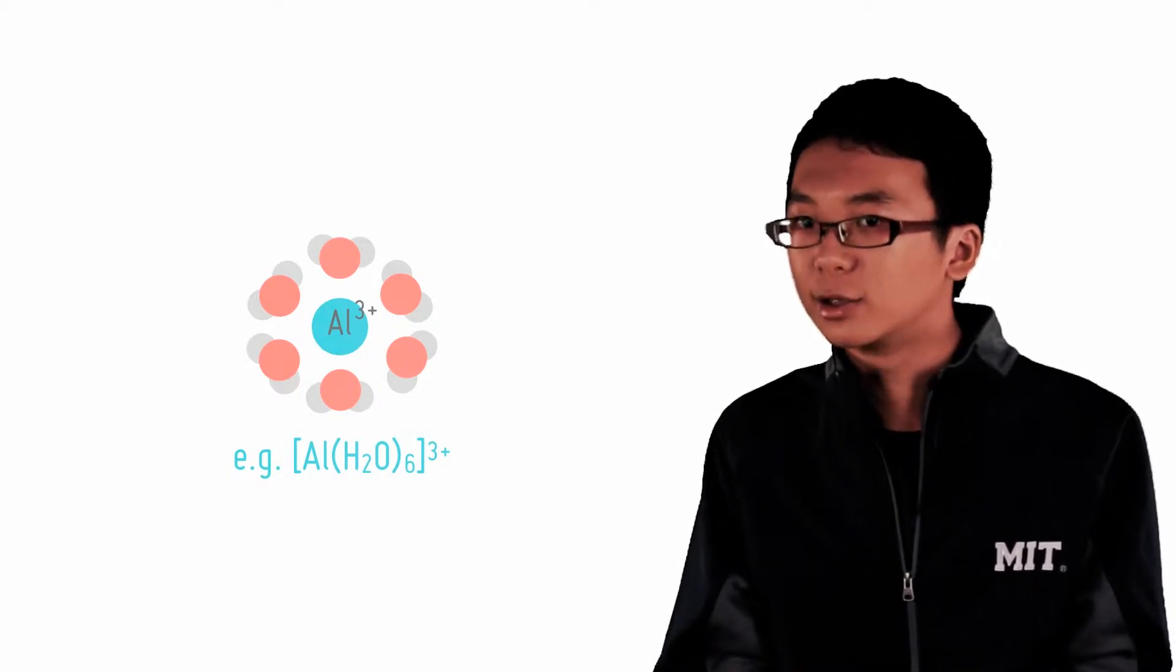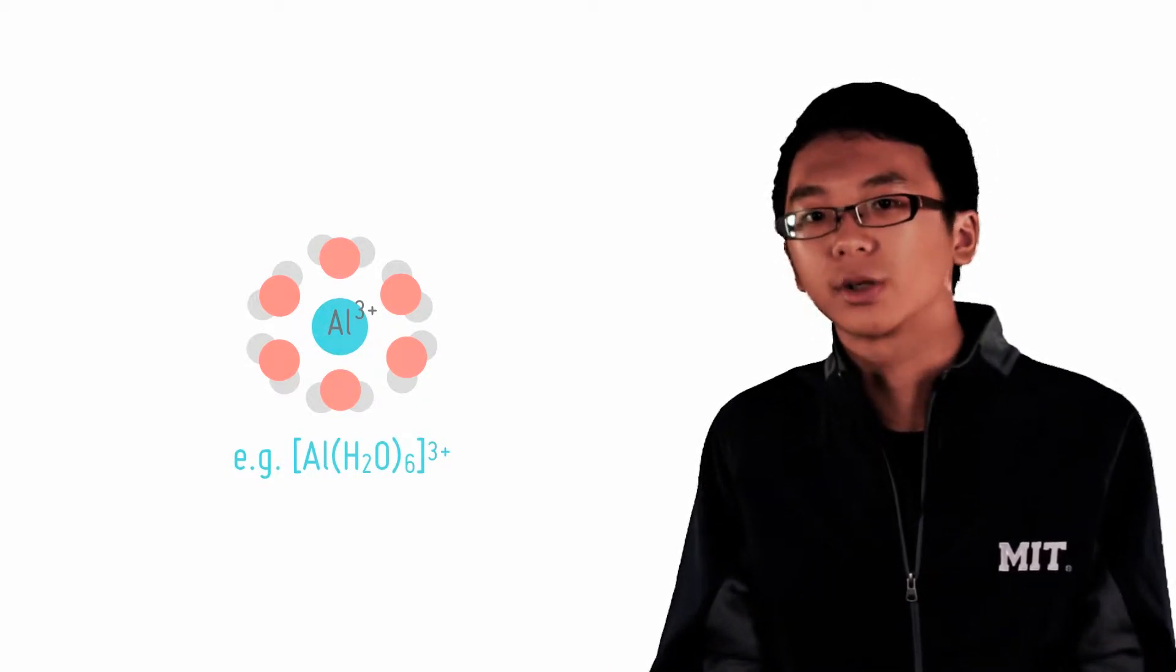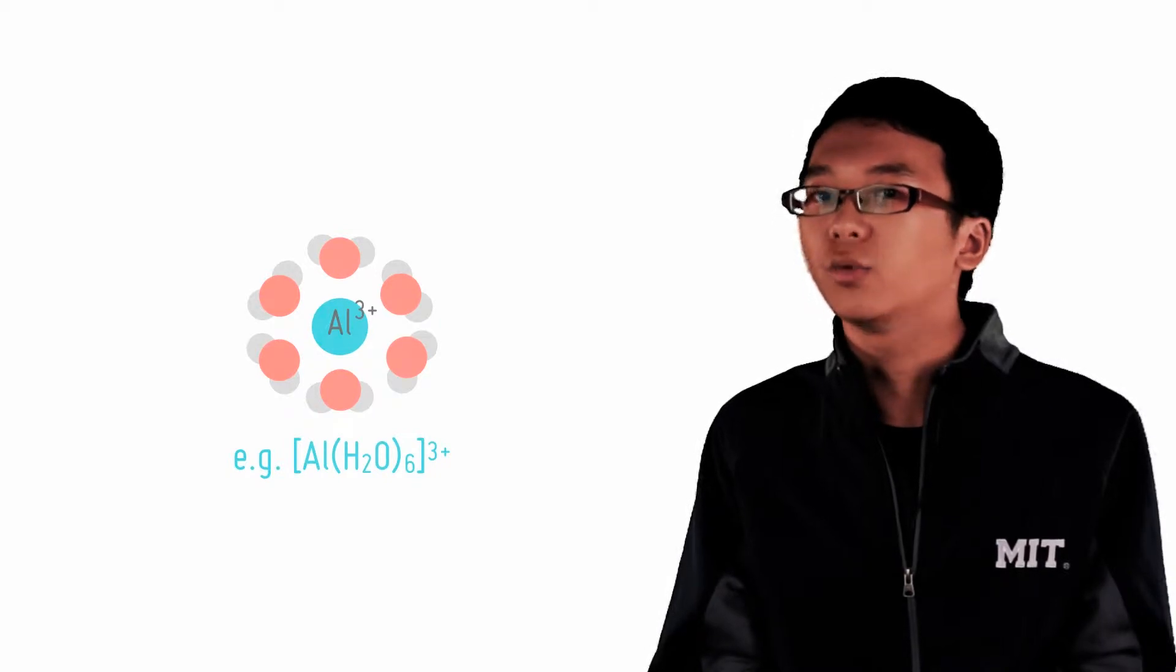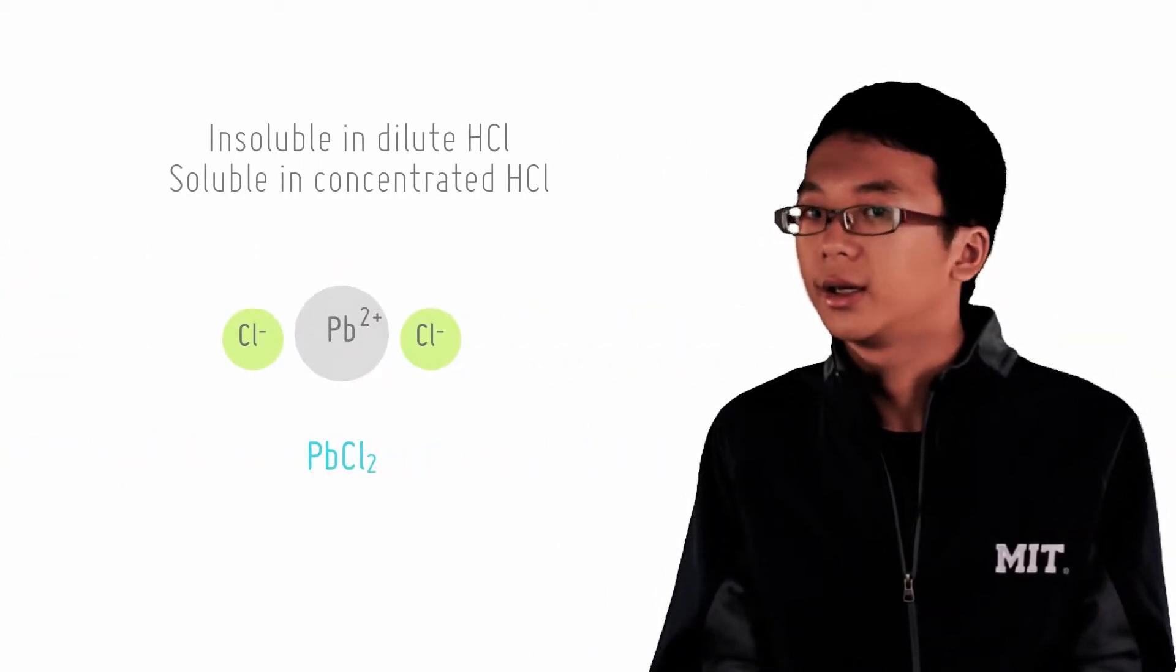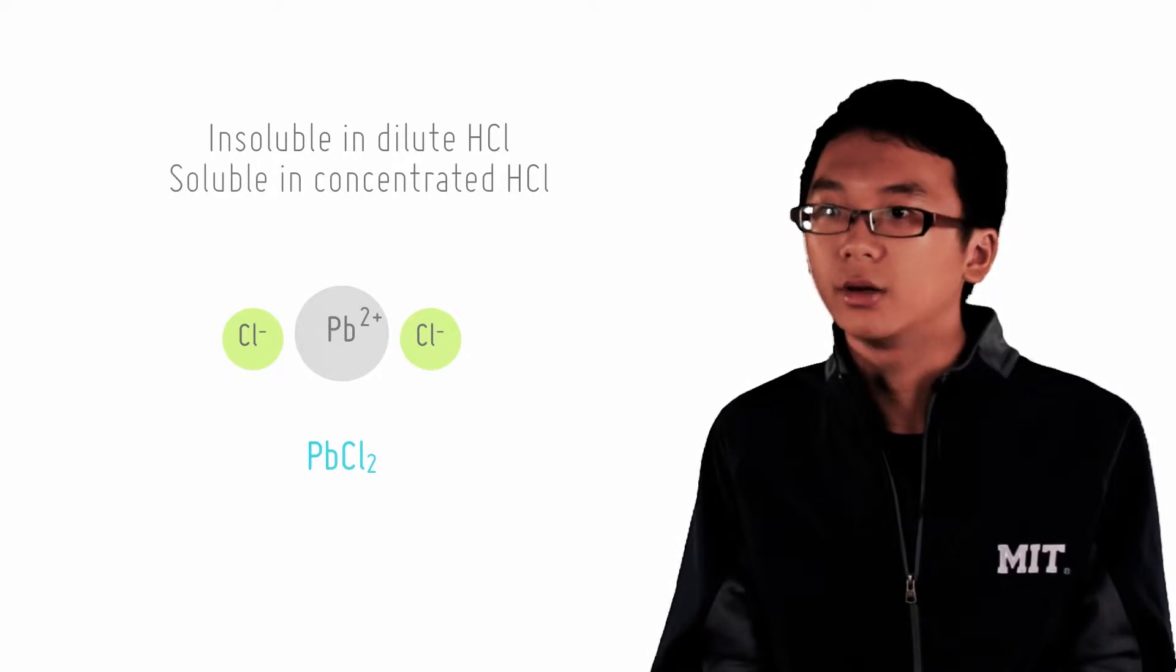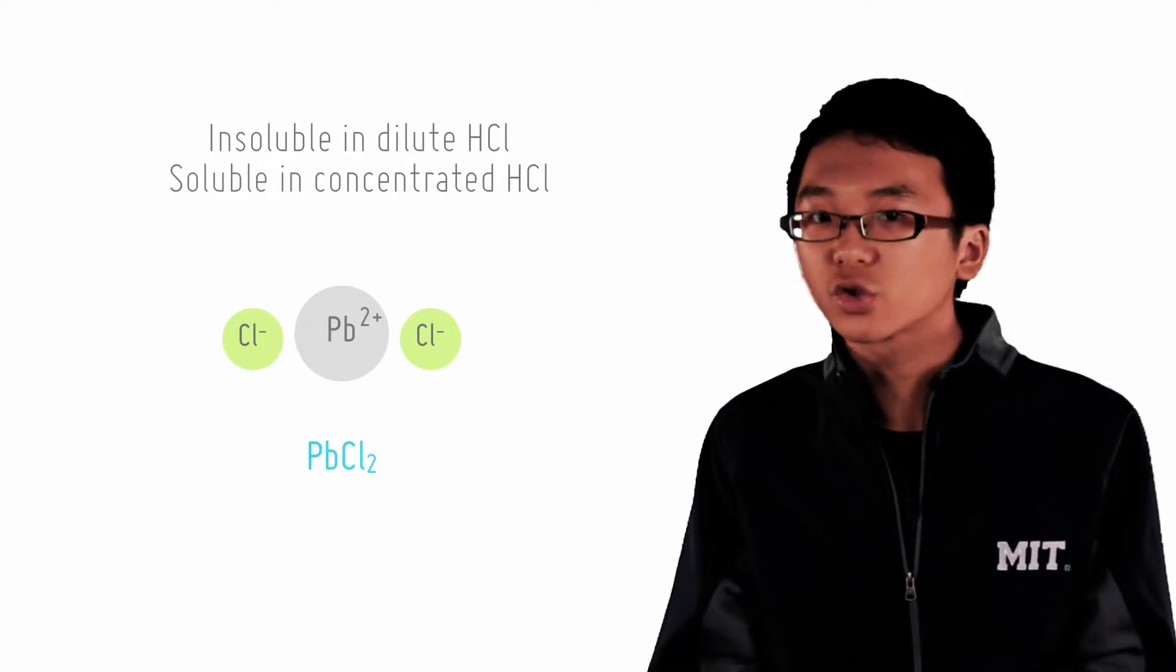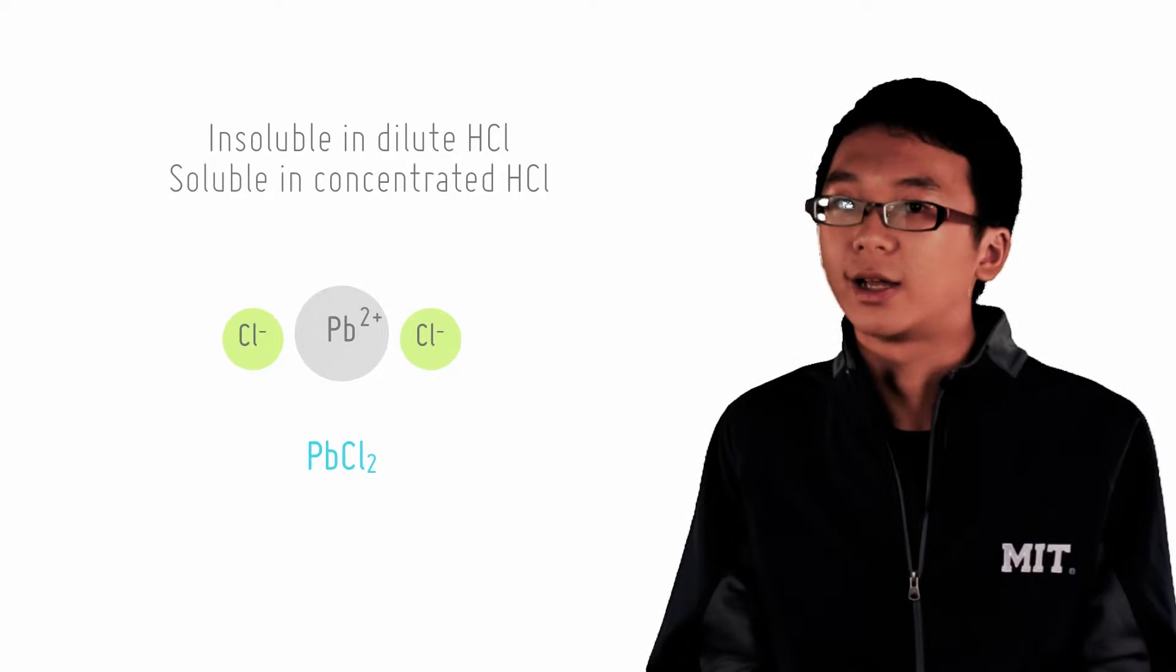The formation of complexes in a solution can make a sparingly soluble salt much more soluble than it would be in solution. Take for example, lead chloride. It is insoluble in dilute HCl, but highly soluble in concentrated HCl. Let's look at the dilute case first.